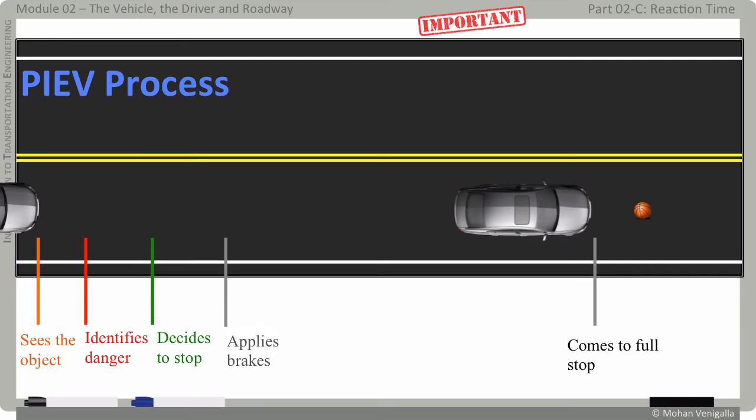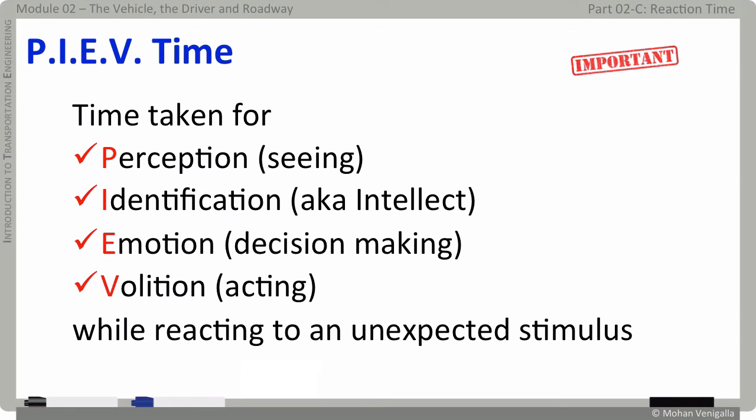The process of seeing the object, the orange line, is called perception. The process of identifying the danger is called intellect, seen here in red. The point of decision making, shown by green line, is called emotion. And finally, the point at which action was taken is called volition point. As seen in previous illustration, perception, identification, emotion, and volition are four stages of cognition before action.